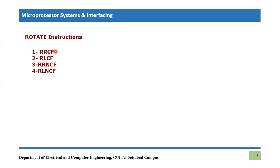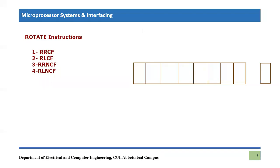So what is rotate right carry flag and what is rotate left carry flag? Let's understand them with the help of a suitable diagram. In this diagram, we see an 8-bit location which can be any of the file register locations. These are basically bits 0 through 7, so there are 8 bits total.